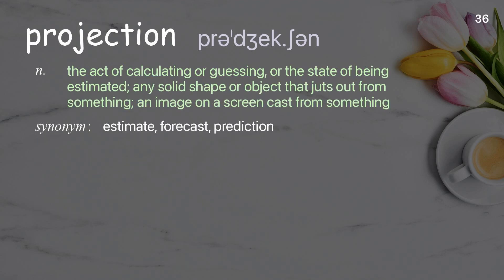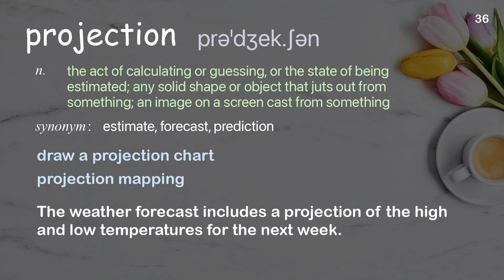Projection: The act of calculating or guessing, or the state of being estimated; any solid shape or object that juts out from something; an image on a screen cast from something. Examples: Draw a projection chart. Projection mapping. The weather forecast includes a projection of the high and low temperatures for the next week.